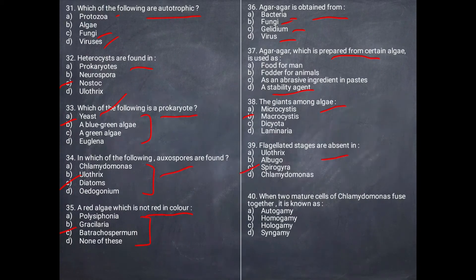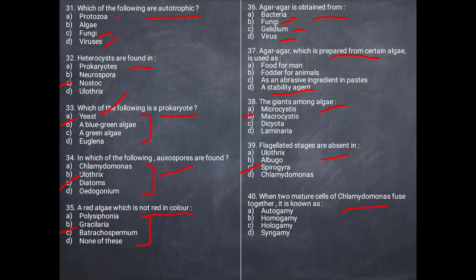Next question: Flagellated stages are absent in which algae? They are absent in Spirogyra. Next question: When two mature cells of Chlamydomonas fuse together, what do we call this situation? It is called hologamy.